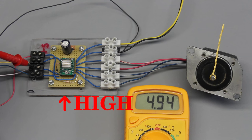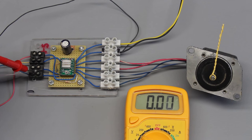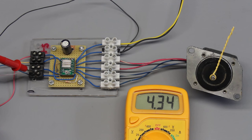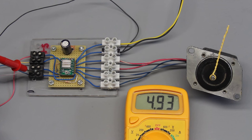The direction pin rules the direction of movement. If that pin is on low level, the motor spins clockwise with each pulse at the step pin, while the movement is counterclockwise if a high signal is applied to the direction pin.